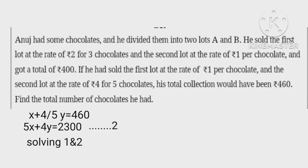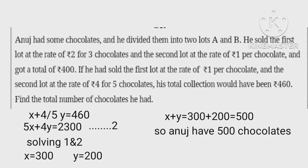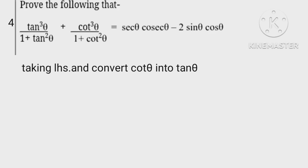Solving equations 1 and 2, we get x equals 300 and y equals 200. x plus y equals 300 plus 200 equals 500. So Anuj had 500 chocolates.